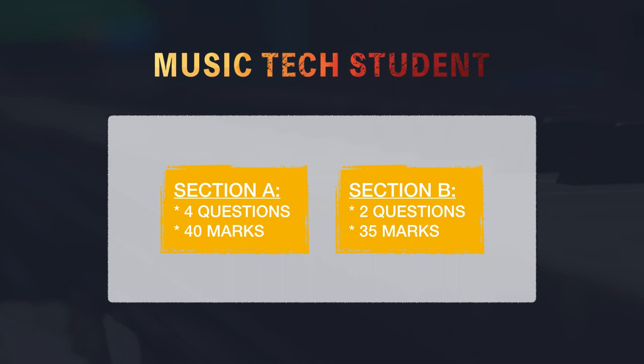Before we go on, we'll just look at the whole Component 3 exam. It's made up of two sections: Section A and Section B. Section A has four questions, and each question is worth 10 marks, so the whole section is worth 40 marks. Section B has two questions — one worth 20 marks and one worth 15, so the whole section is worth 35 marks. That is slightly different for the AS, which only has one question for Section B, which is the comparison question. Today we're just going to focus in on question one, which is part of Section A.